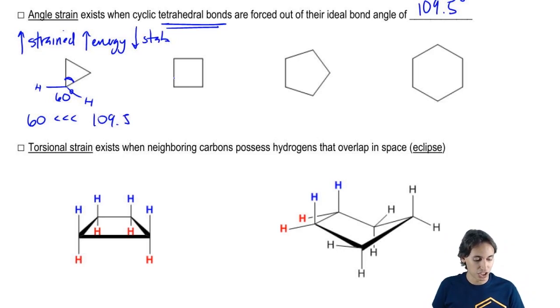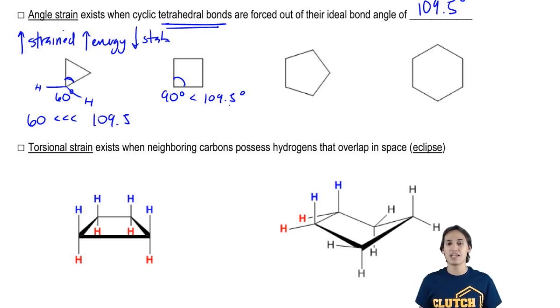The square is a little bit better, actually a lot better. It's at 90 degrees, but that's still pretty far off from 109.5. So in this case, this one's a little bit better, but it still has angle strain.